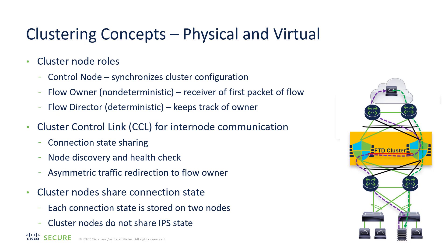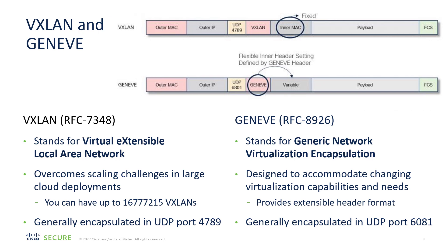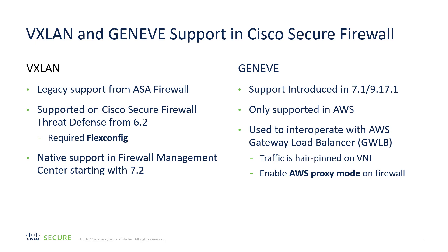In order to understand how we port clustering to the cloud, we have to understand VXLAN and a related concept of GENEVE. Both of these are encapsulation protocols. VXLAN was introduced to overcome the challenge of large cloud deployments. You can have a large number of VXLANs, much more than you could have VLANs, but the metadata was very limited. So GENEVE was introduced to accommodate the changing virtualization capabilities and needs. The key difference being that it provides an extensible header format so that metadata can be communicated to nodes. This is exactly what is required for service chaining in the cloud.